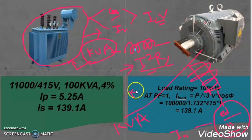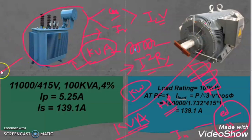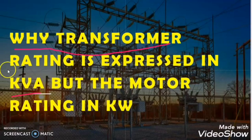In my next video I will cover why the motor rating is given in kilowatt and not in kVA, even though the transformer and motor are very similar. There is a big difference — the transformer is a source but the motor is a load. We will discuss in depth why the motor rating is not given in kVA. Stay tuned. I hope you liked this video and learned something new. Please give a thumbs up and subscribe to my channel. Take care, keep learning, bye bye. Thank you so much.